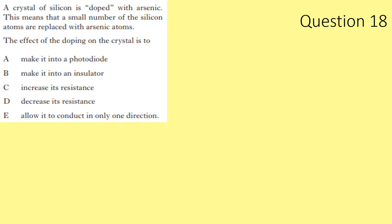Question 18. A crystal of silicon is doped with arsenic, replacing a small number of silicon atoms. The effect of doping is to decrease its resistance because conductivity is increased.